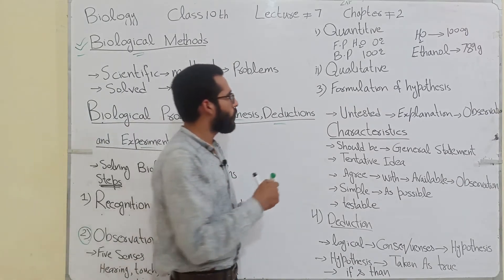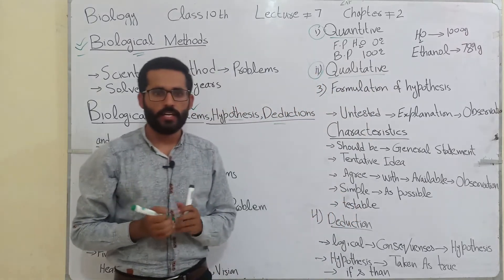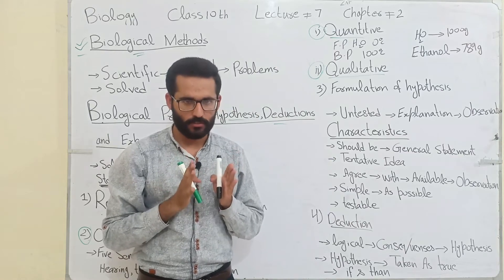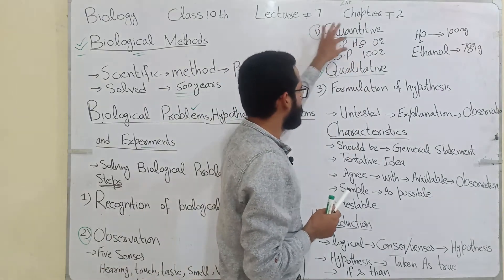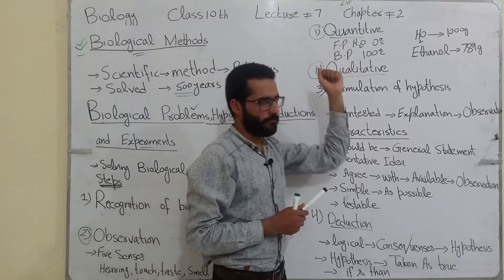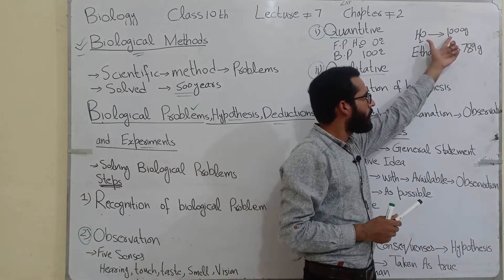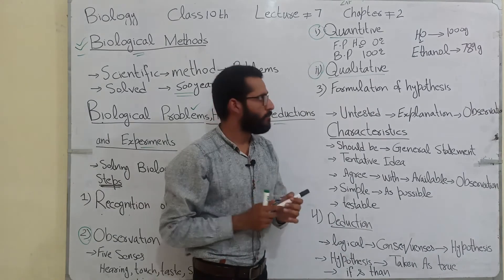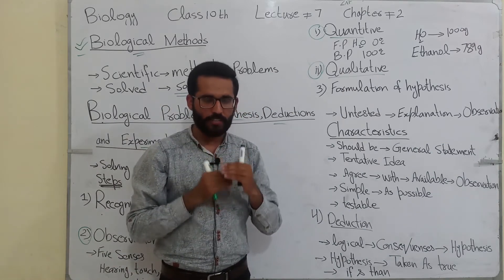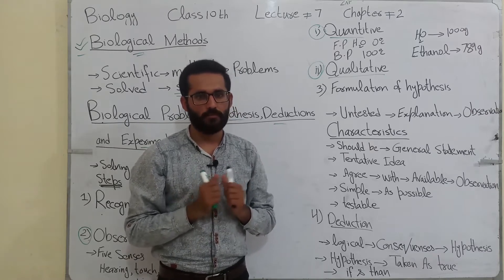One is quantitative observation and the other is qualitative observation. In case of quantitative observation, we write the observation in numerical form — we write the values. Like the freezing point of water is 0 degrees, the boiling point of water is 100 degrees — these are values. When we measure water and ethanol weight, water is 100g in 1 liter but ethanol is 789g in 1 liter. The values which we write in numerical form are known as quantitative observation.